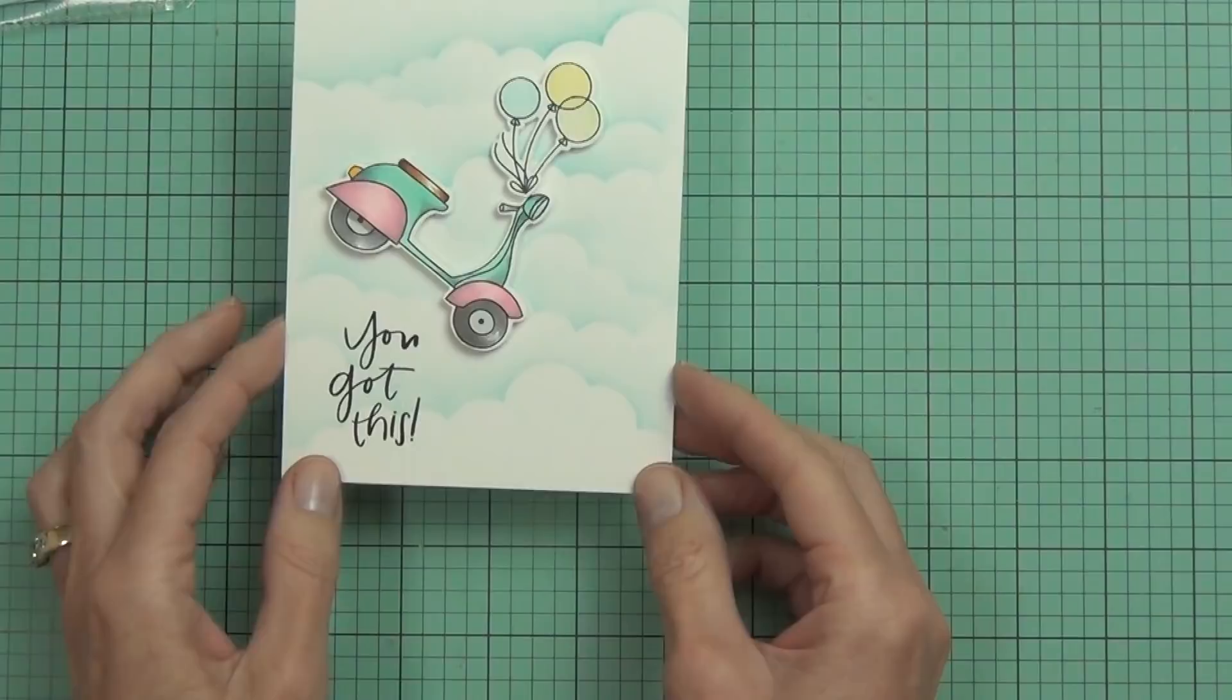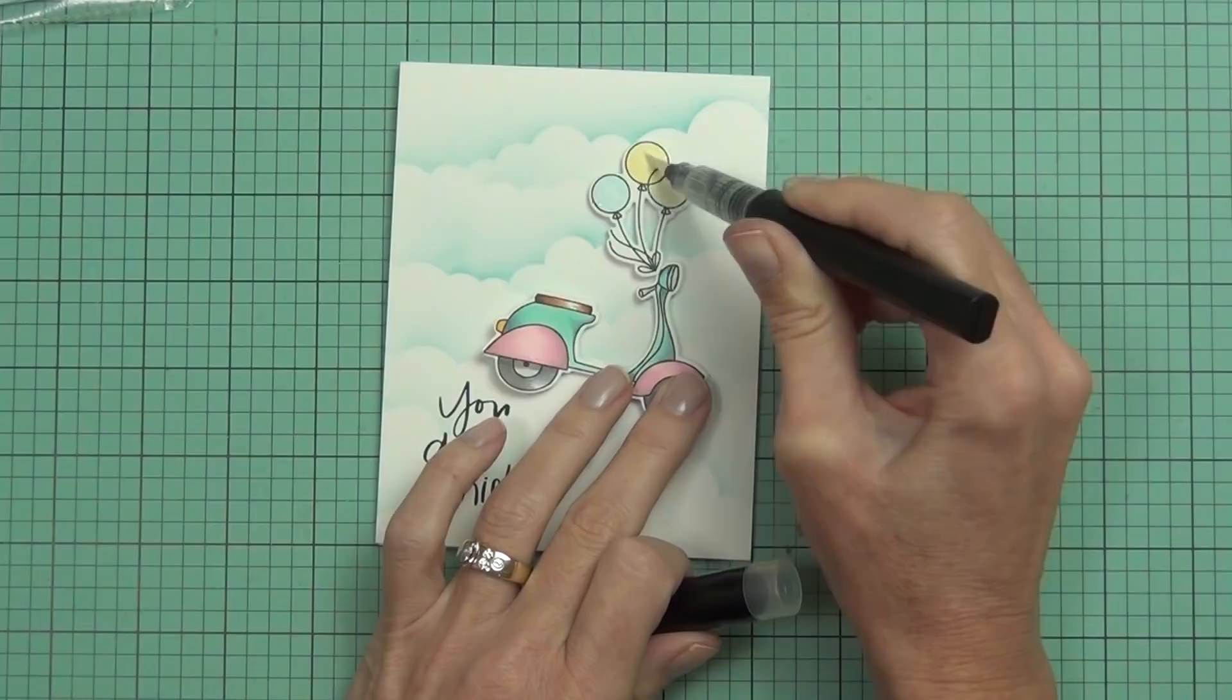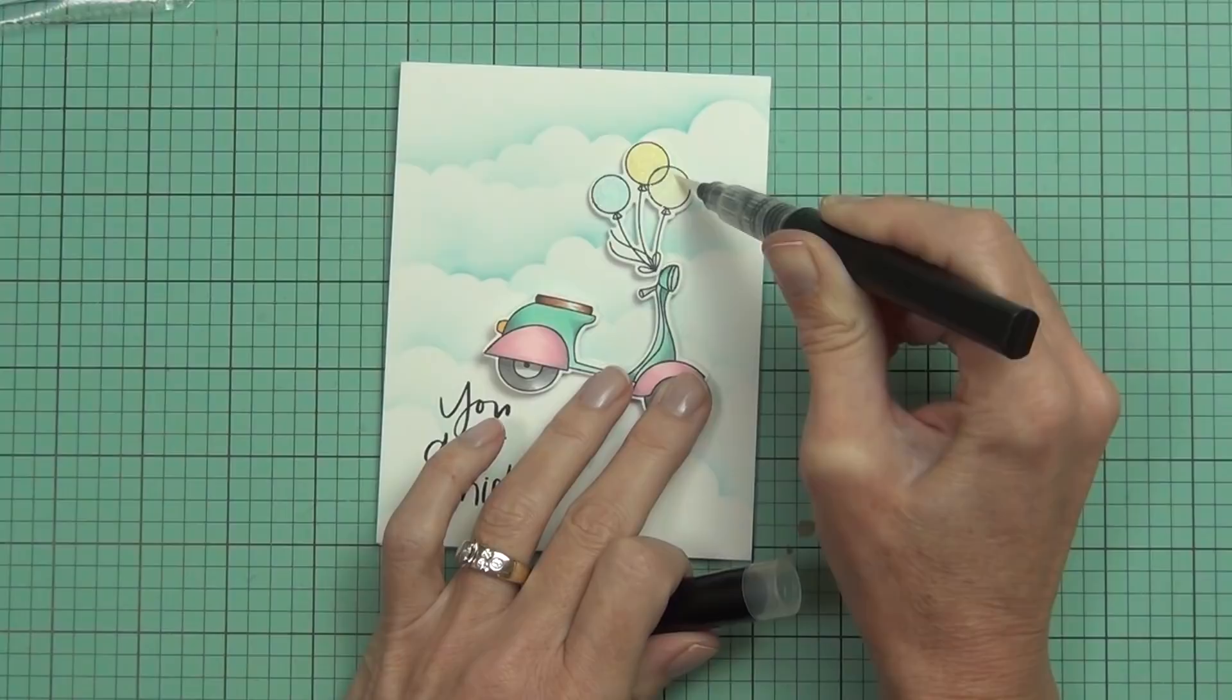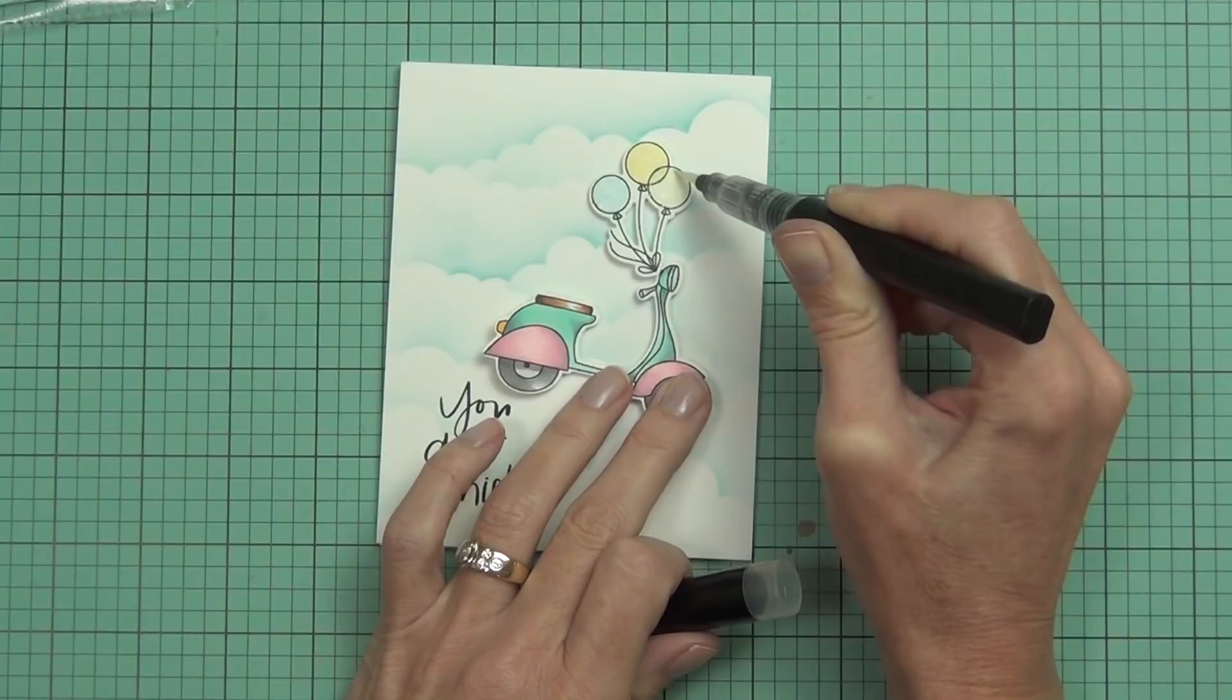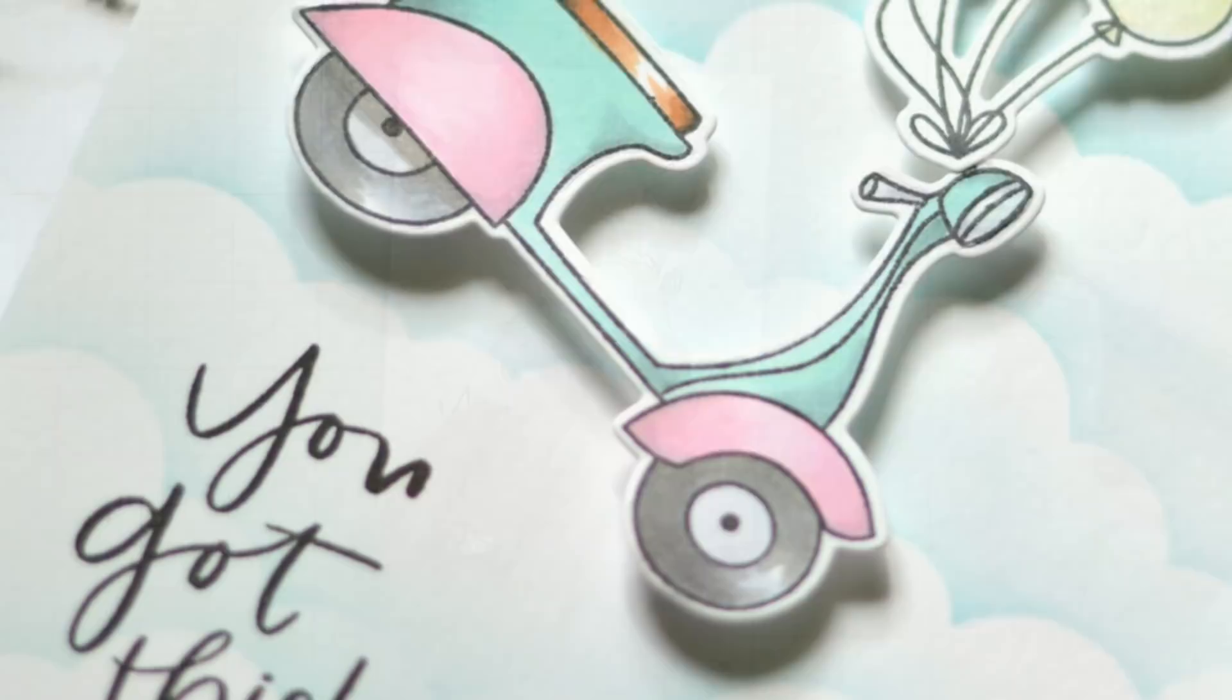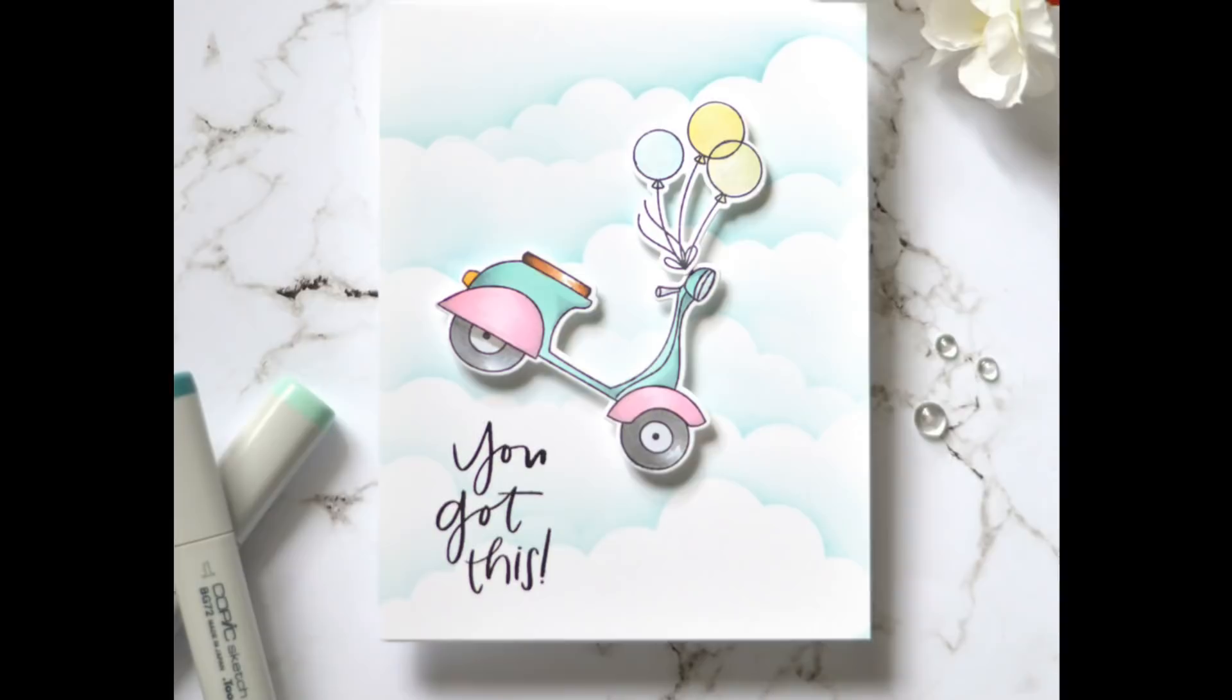I basically just looked through all my die sets until I found some really small circle dies. Those ones I used today came from the Little Lady die set, but you can use whatever you've got. A sandwich ends up being a little die cut on the back and the front of the replenishment, and that brings it together to make your swinging element.